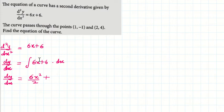Using x raised to n+1 over n+1: that's 6x²/2 plus 6x plus the integrating constant c. Simplifying, that's 3x² + 6x + c. That's your dy/dx.